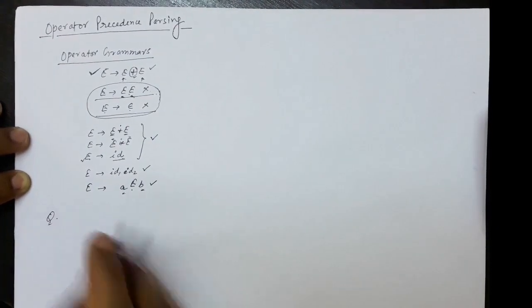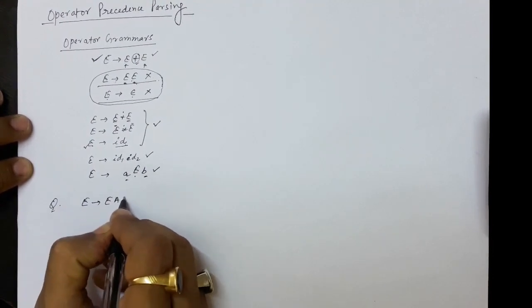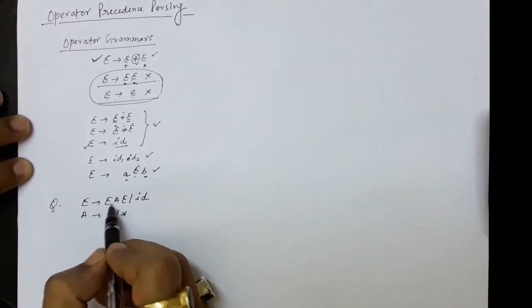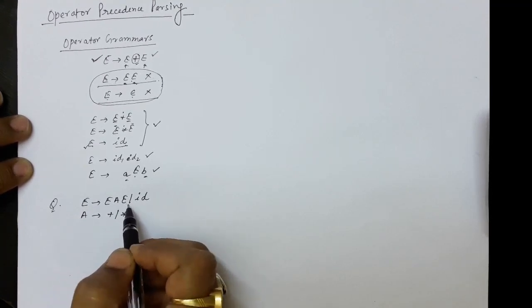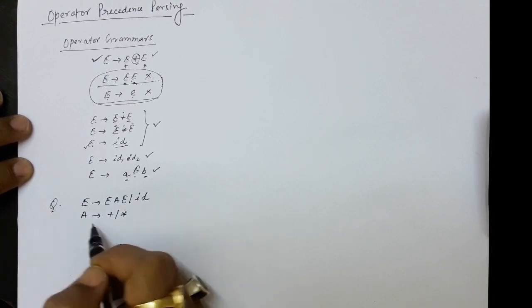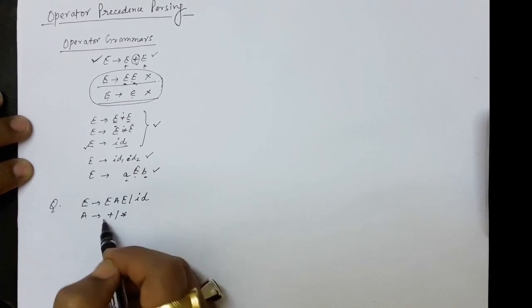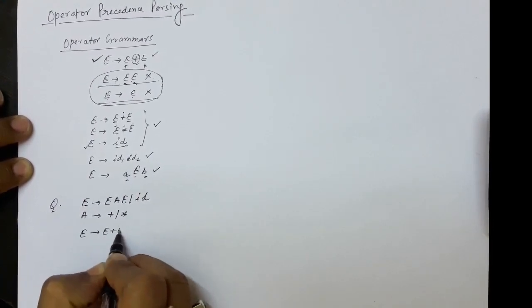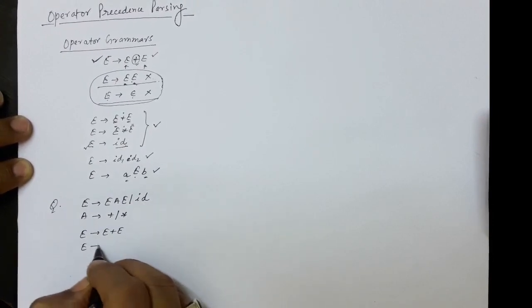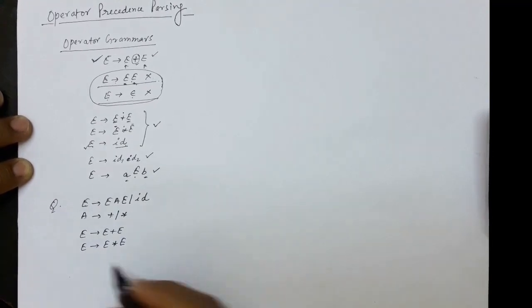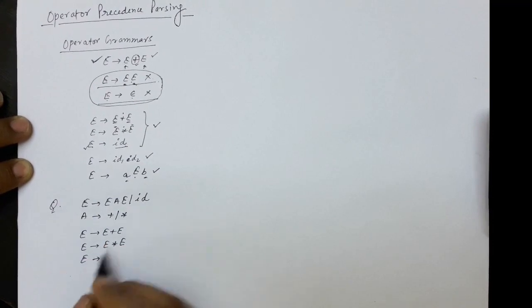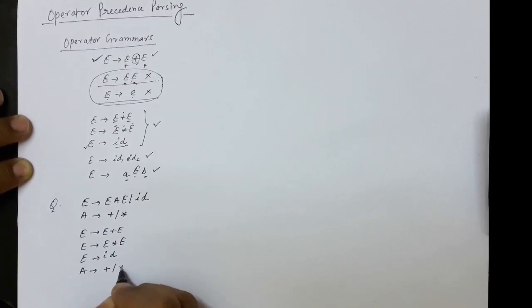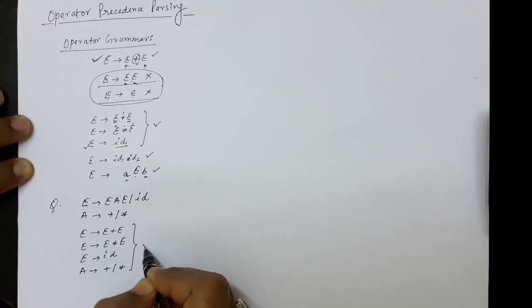Now suppose we have a grammar that is not an operator grammar, but it can be converted to one. For example, E → EAE where three non-terminal symbols appear simultaneously — this is not an operator grammar. But because of the productions E → id and A → plus or multiplication, these are acceptable. So we can convert it to an operator grammar by substituting A: writing E → E plus E and E → E star E, along with E → id. This grammar has now become an operator grammar.